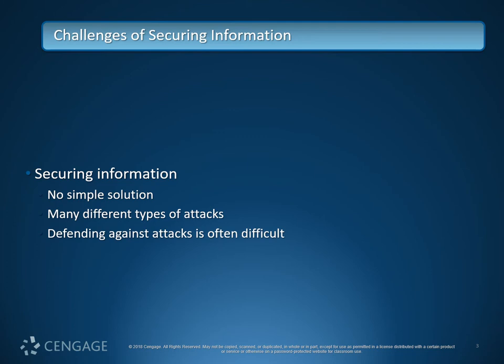There was a breach in a Las Vegas casino because somebody was able to breach the firmware for a fish tank controller — the salinity, pH, and aeration. They were able to get into one of those custom controller systems and use that to pivot into the rest of the casino's network. Pivoting is a term you'll hear quite a bit. It basically means taking advantage of a weaker system that is connected to a larger, more valuable system.